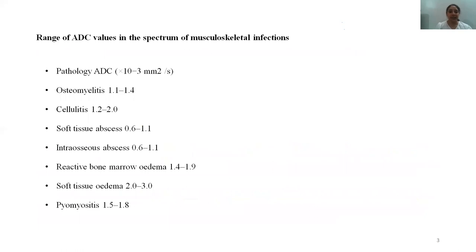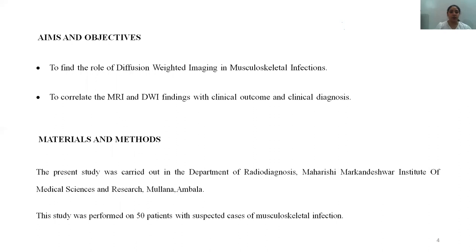Here are some ADC values obtained in the spectrum of musculoskeletal infections. For osteomyelitis, the value ranges from 1.1 to 1.4. For soft tissue abscesses and intraosseous abscesses, the ADC value corresponds to 0.6 to 1.1. For pyomyositis the value is 1.5 to 1.8, and for soft tissue edema the values are slightly higher at 2 to 3.